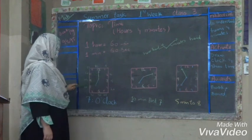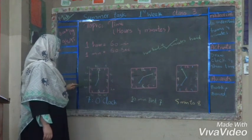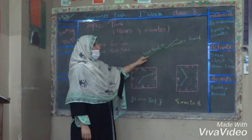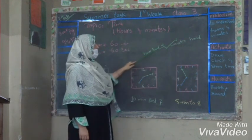As we know there are two needles in the clock, the big needle and the small needle. The big needle is set for minutes and the small hand is set for hours.